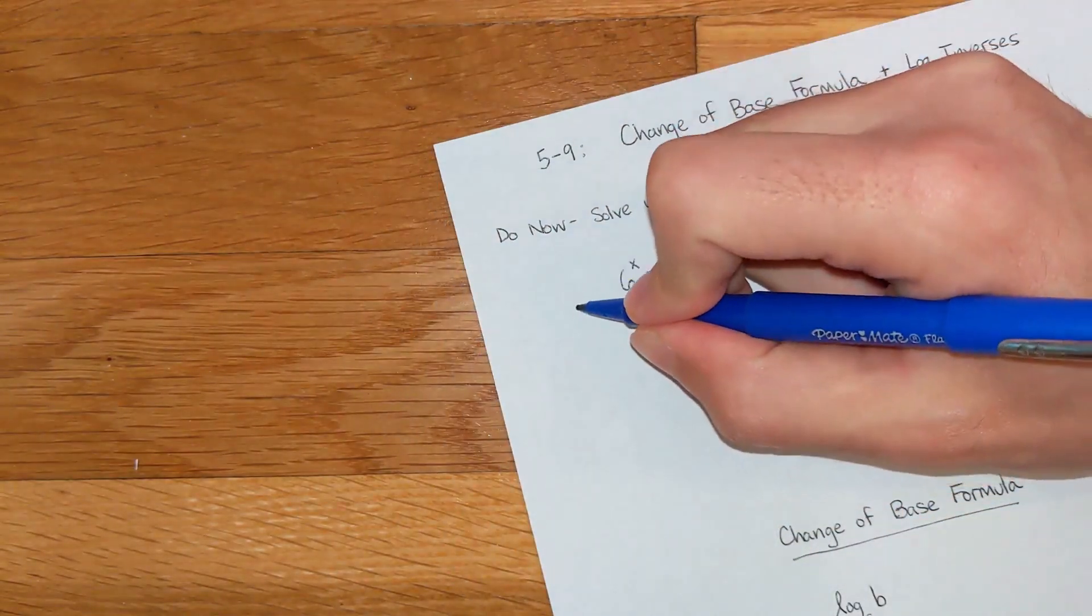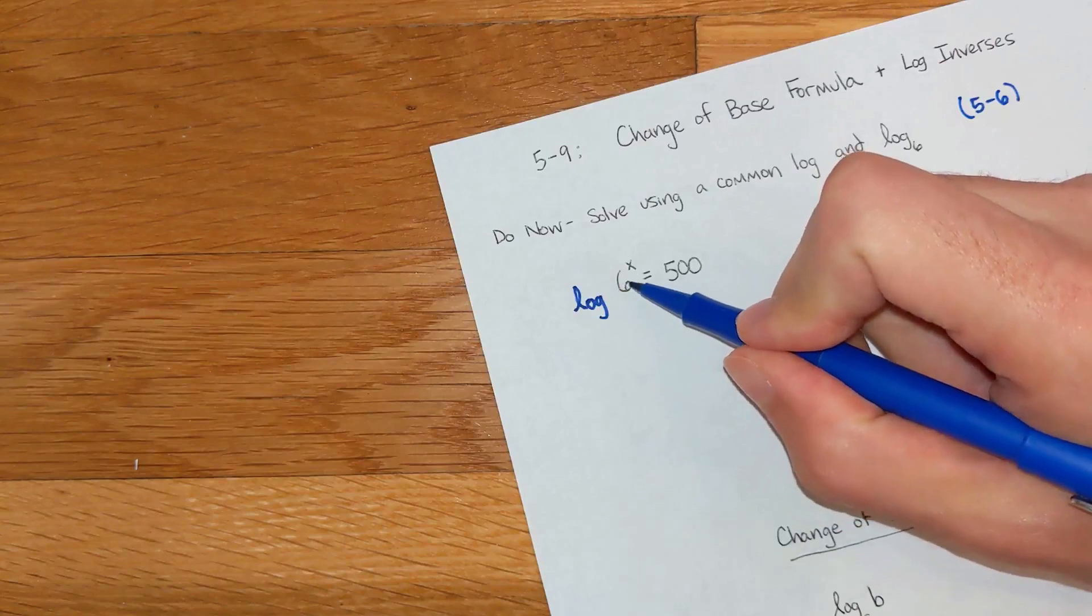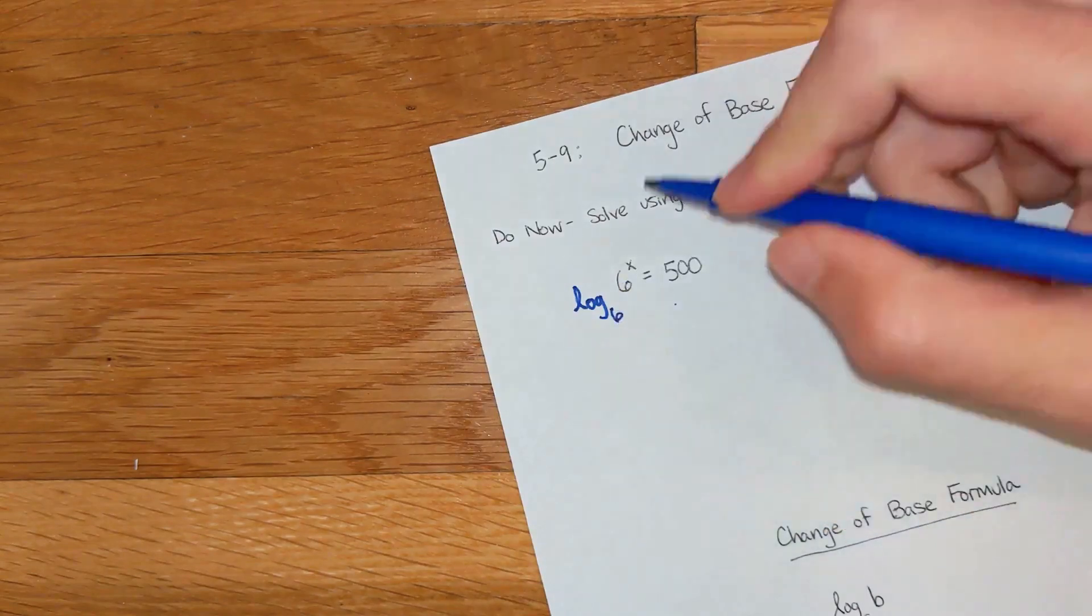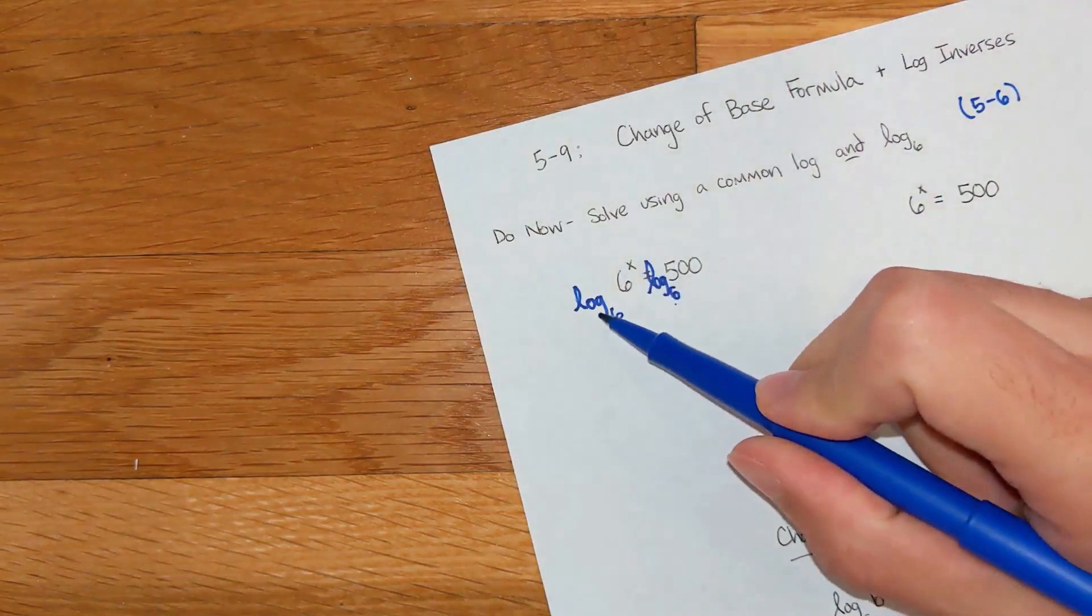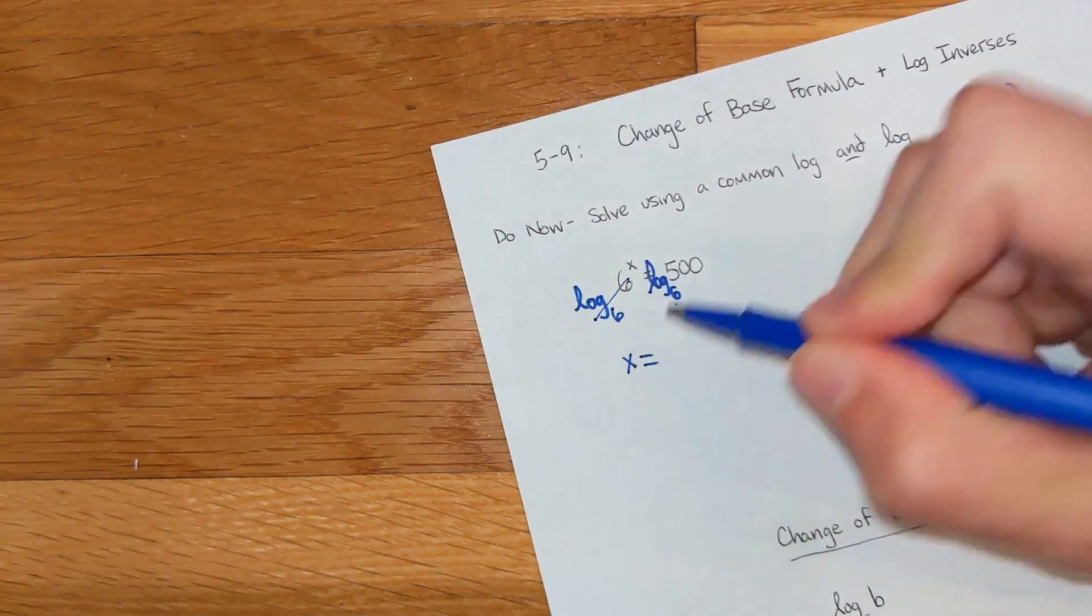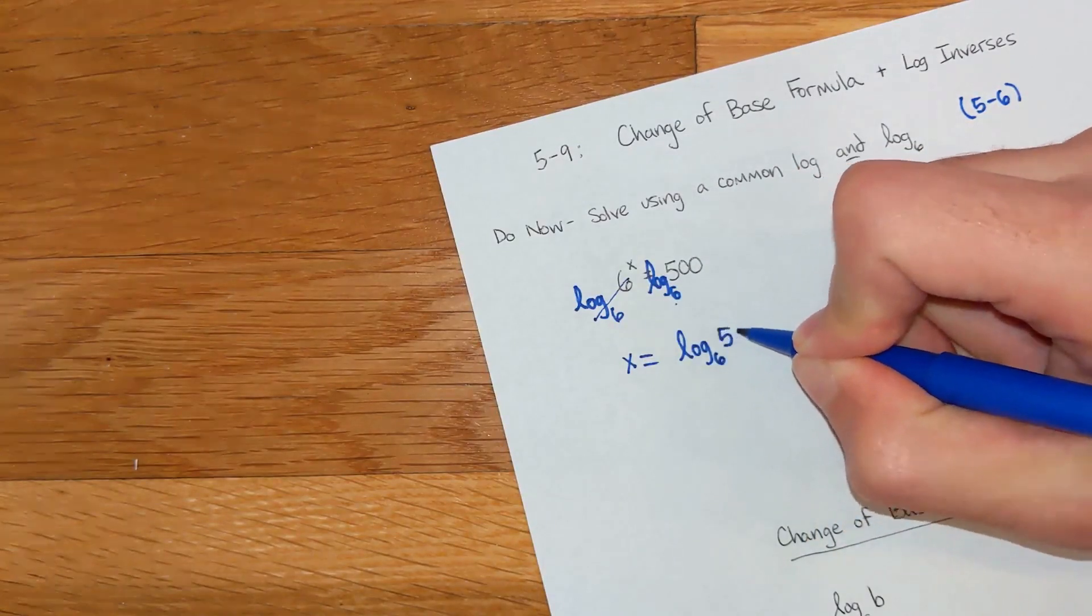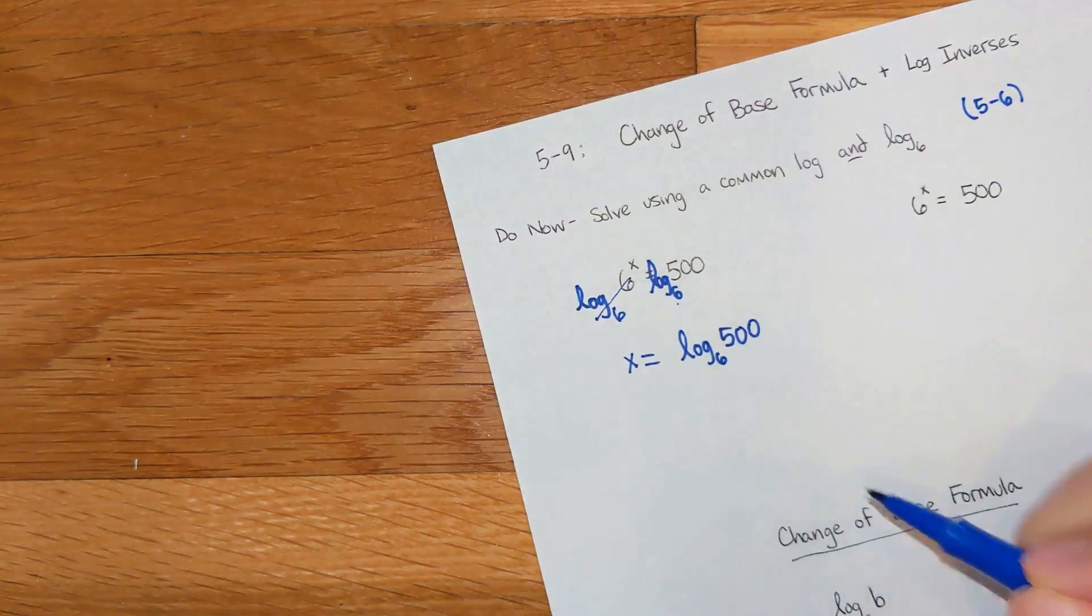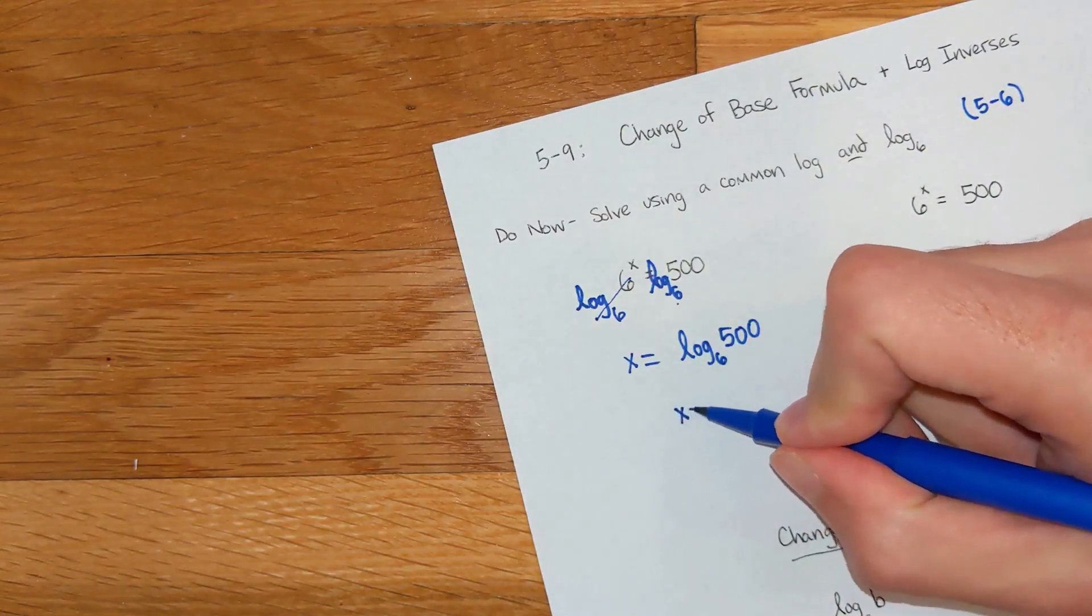One option that we talked about was doing a log with a matching base of this number right here to both sides. So I could just do log base 6 of both sides. These would cancel each other out, and we would end up with x equals log base 6 of 500. And if you type that in the calculator, you should get 3.47 for your answer.